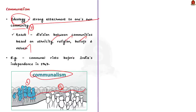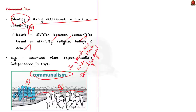For example, let us take the communal discord that happened months before India's independence. Between January and March 1947, communal violence took place in several parts of India between Hindus and Muslims. The reason for such communal violence was the demand of Muslims headed by Muhammad Ali Jinnah for a separate state, which was consistently opposed by Congress members. This led to communal violence between Hindus and Muslims — one such example of communalism.